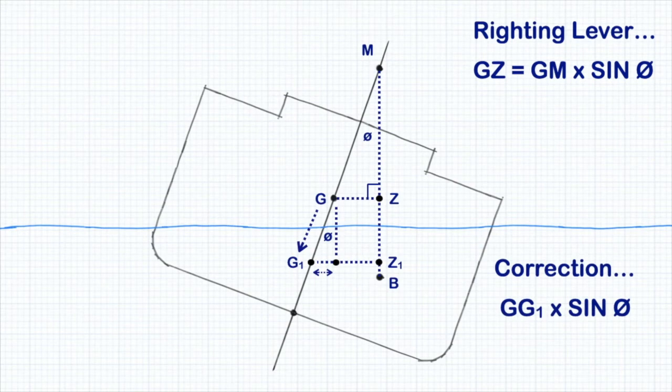This correction can be added or subtracted to determine how the righting lever has been affected by a shift in the center of gravity.